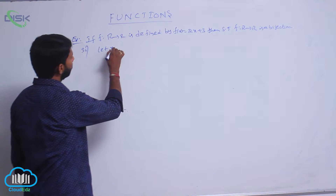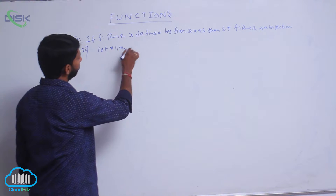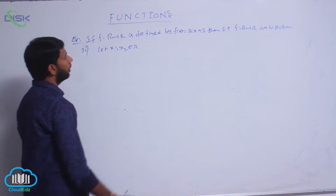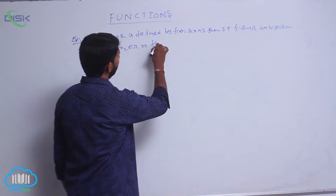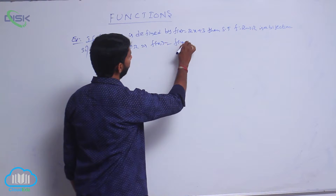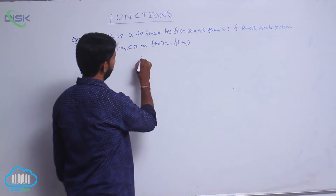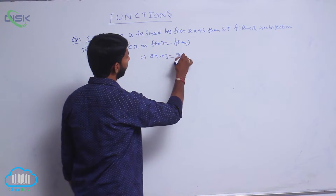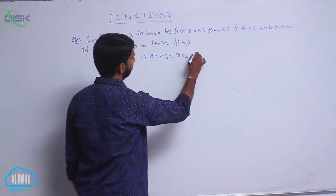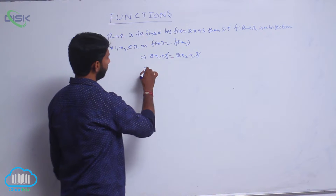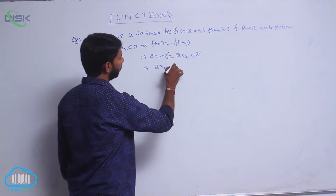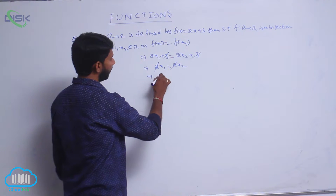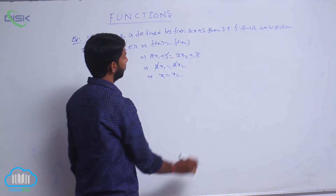Suppose x1, x2 belongs to R, that implies f of x1 is equal to f of x2. Here f of x1 is 2x1 plus 3 is equal to 2x2 plus 3. Here 3 and 3 get cancelled, that implies 2x1 is equal to 2x2. Here 2 cancels, that implies x1 is equal to x2.